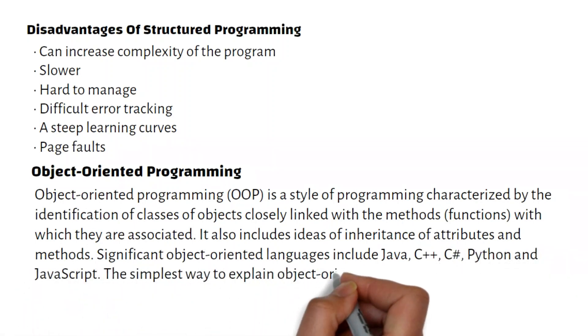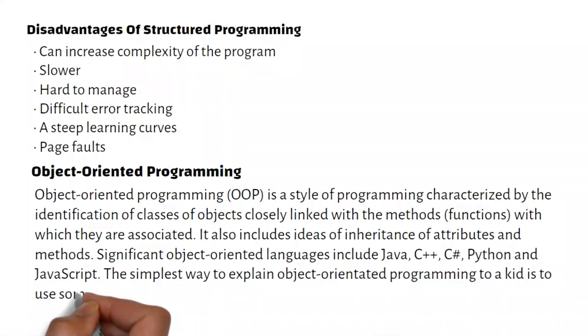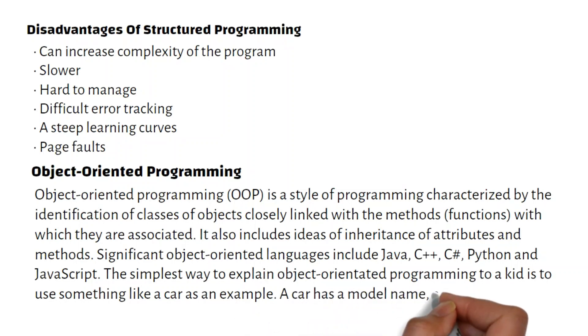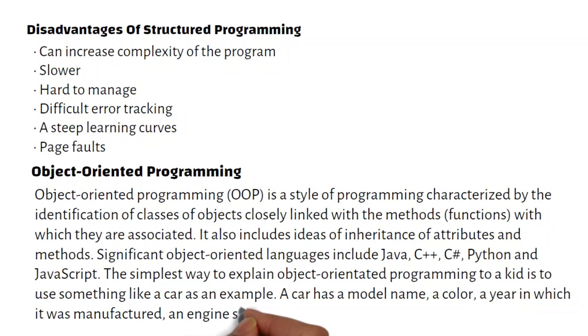The simplest way to explain object-oriented programming to a kid is to use something like a car as an example. A car has a model name, a color, a year in which it was manufactured, an engine size, and so on.